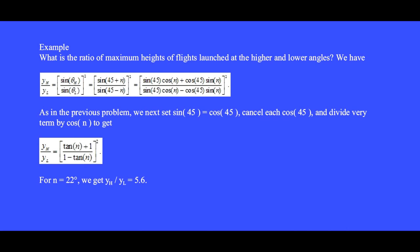We get y_h over y_l is the square of tan n plus 1 over 1 minus tan n. For angle 22 degrees, this ratio is 5.6, which means that the high launch angle reaches 5.6 times higher into the air than does the lower launch angle.